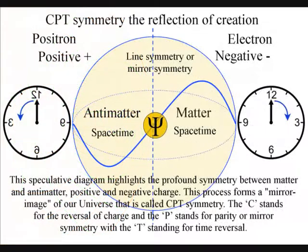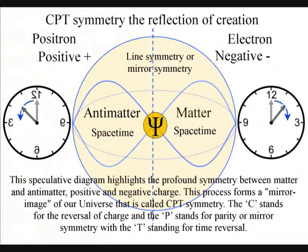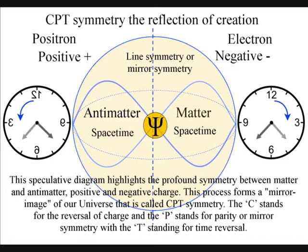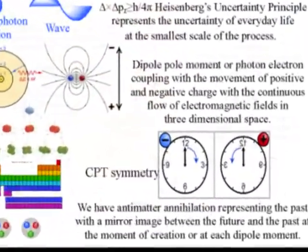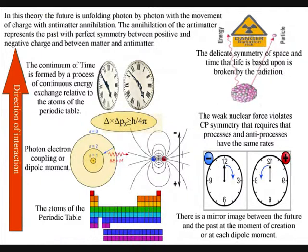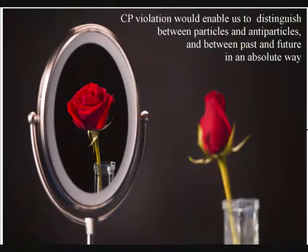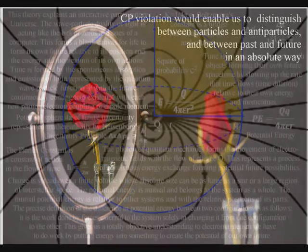This process also forms 100% anti-matter annihilation, with the future being based 100% on the past. In the lower right of the diagram, we see this as symmetry forming and breaking in the form of anti-matter annihilation representing the past, with a mirror image between the future and the past at the moment of creation, or at each dipole moment.